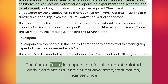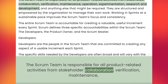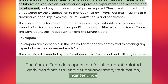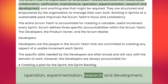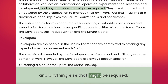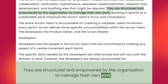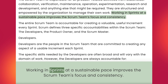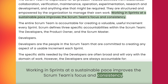The Scrum team is responsible for all product-related activities from stakeholder collaboration, verification, maintenance, operation, experimentation, research and development, and anything else that might be required. They are structured and empowered by the organization to manage their own work. Working in sprints at a sustainable pace improves the Scrum team's focus and consistency.